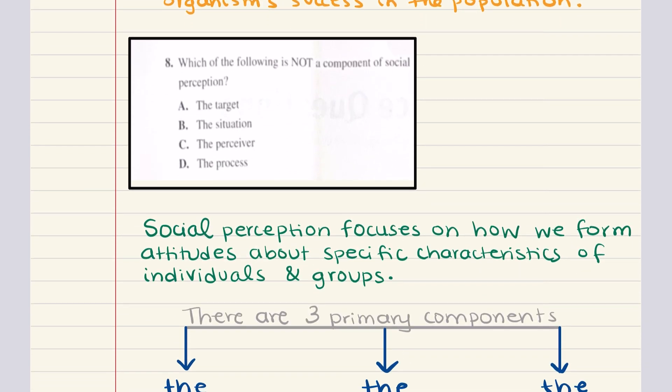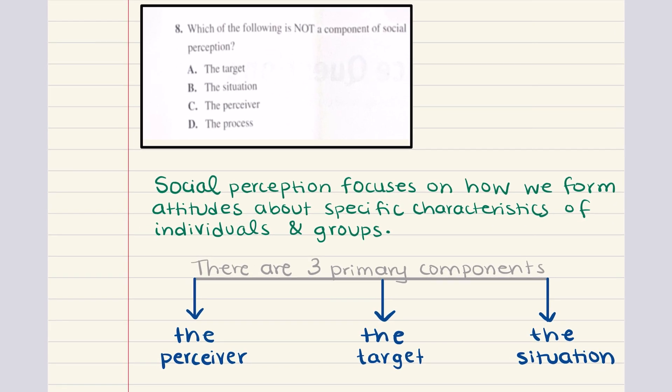Eight says, which of the following is not a component of social perception? This is a really easy definition question. We talked about the three primary components of perception being the perceiver, the target, and the situation. And so that means the answer here is going to be D. The process is not a component of social perception.